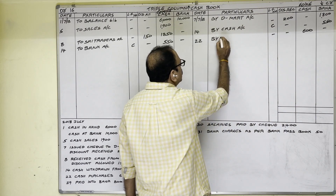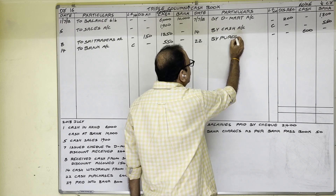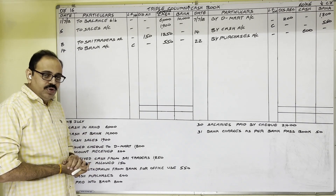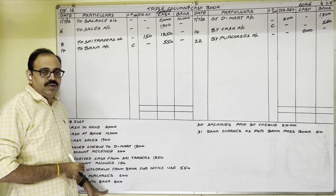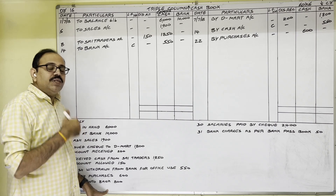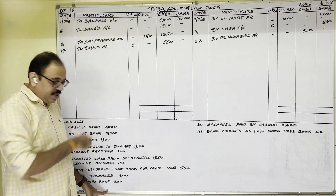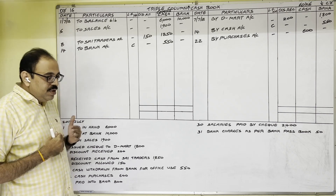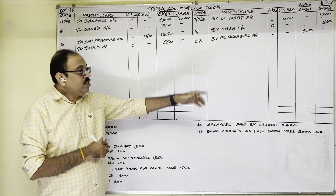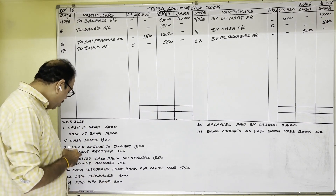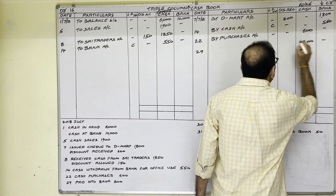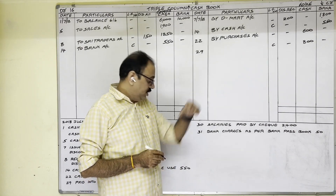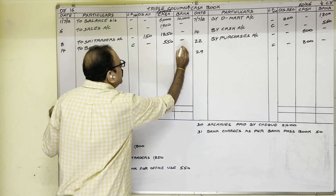29th date: paid into bank 800 rupees. Paid into bank means cash deposited into bank — this is a contra entry. Our firm paid cash into bank, so cash is going out — credit side cash column, 800 rupees on 29th date. We deposited 800 into bank so bank balance increases — debit side bank column, 800 rupees. Write 'C' for contra. In the cash column particulars write 'By Bank Account'.